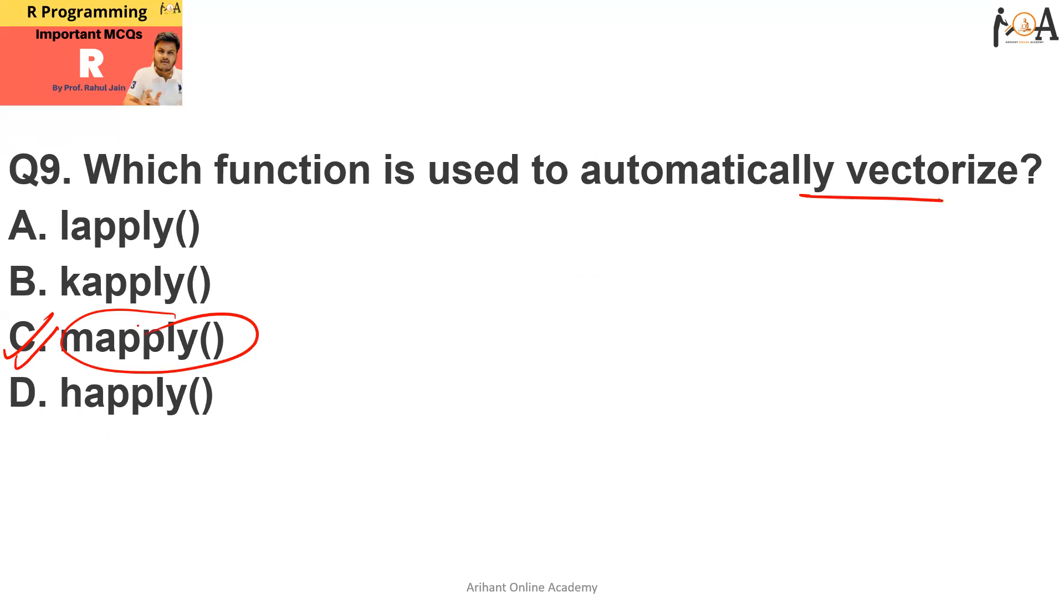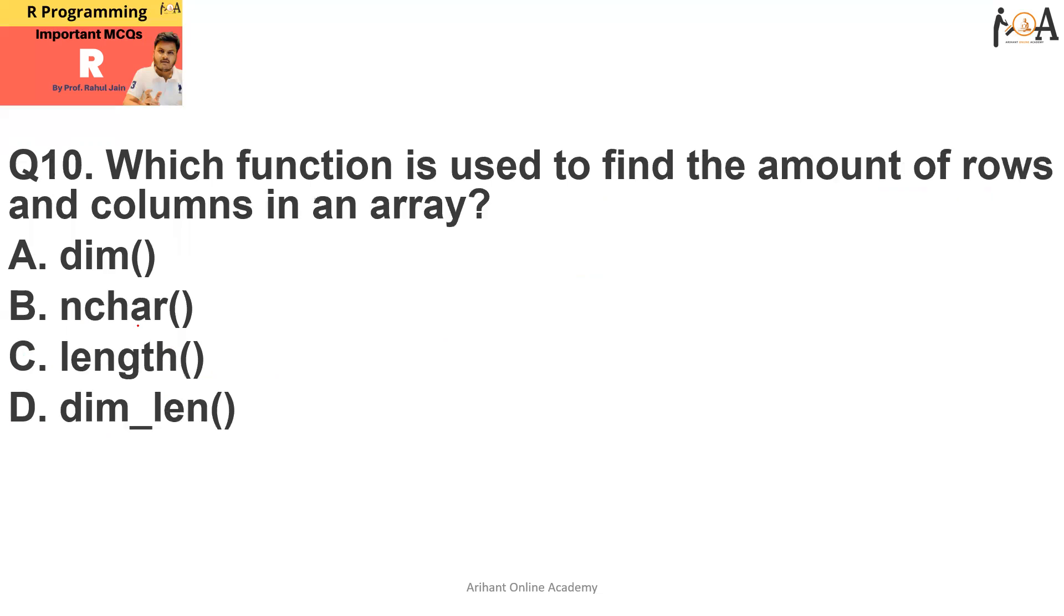Question number ten is which function is used to find the amount of rows and columns in an array? In an array, we want to find out the amount of rows and number of columns. The command is dim. This command is used to find out the rows and number of columns. Dimension, basically. So option A is the correct answer. I hope the first 10 questions are very much clear to all of you guys.